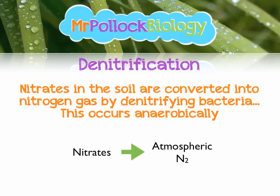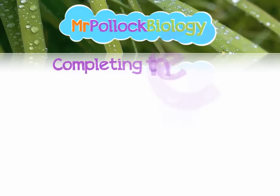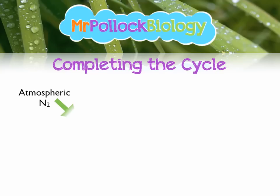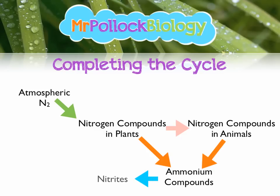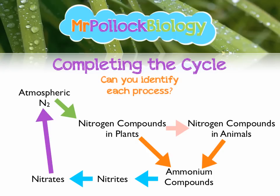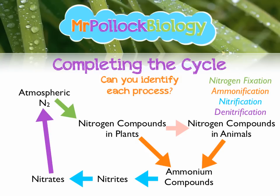So those are the four stages. Looking at the full cycle together: atmospheric nitrogen becomes nitrogen compounds in plants, then nitrogen compounds in animals, both converted to ammonium compounds, then to nitrites, then nitrates, and then on to atmospheric nitrogen. The green arrow is nitrogen fixation, the orange arrow is ammonification, the blue arrows are nitrification, and the purple arrow is denitrification. There's also a pink arrow for feeding, which isn't a particular stage you need to worry about.